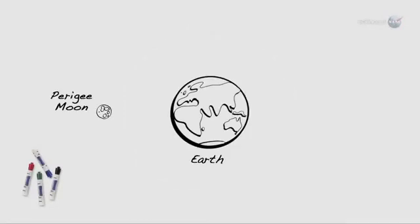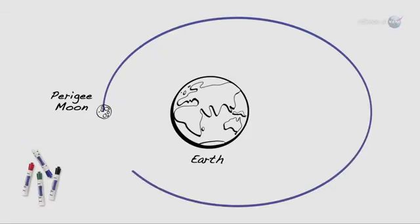The scientific term for the phenomenon is perigee moon. Full moons vary in size because of the oval shape of the moon's orbit. The moon follows an elliptical path around Earth with one side, perigee, about 50,000 kilometers closer than the other, apogee.